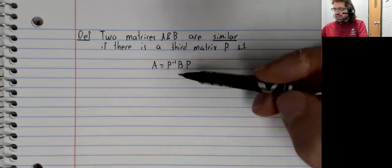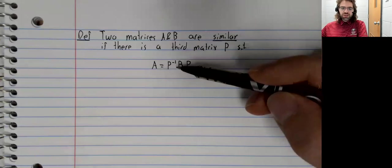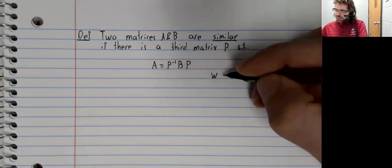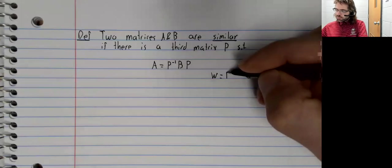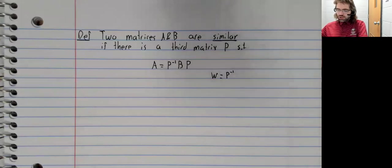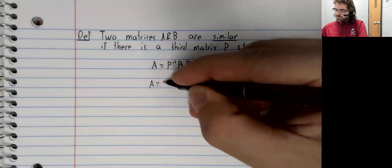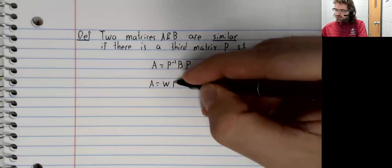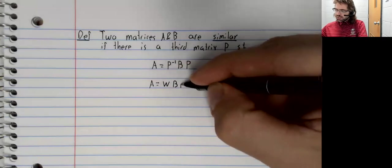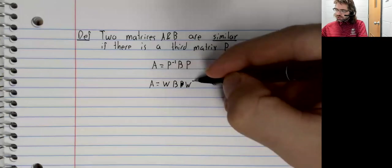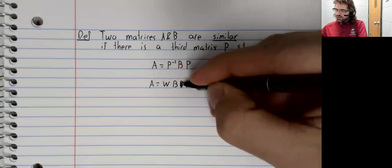And that's because if A equals P inverse B P and we define W to be P inverse, then A equals W times B times W inverse.